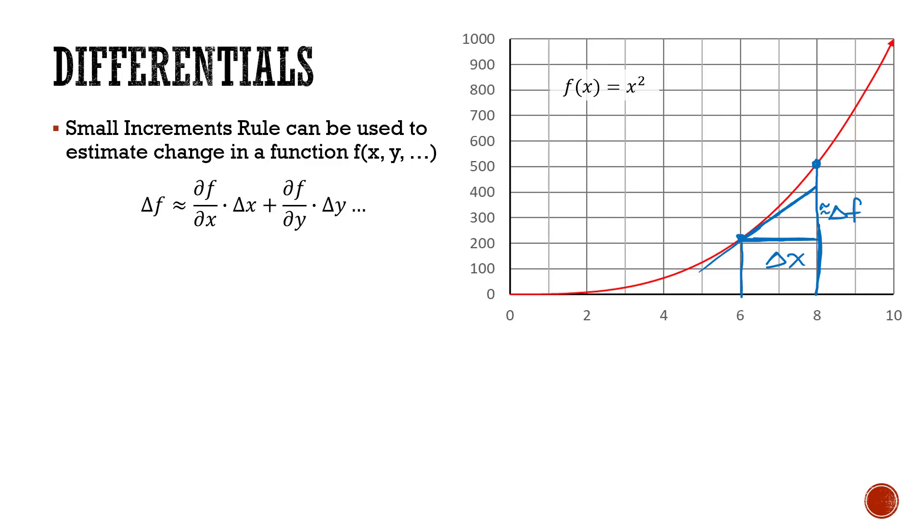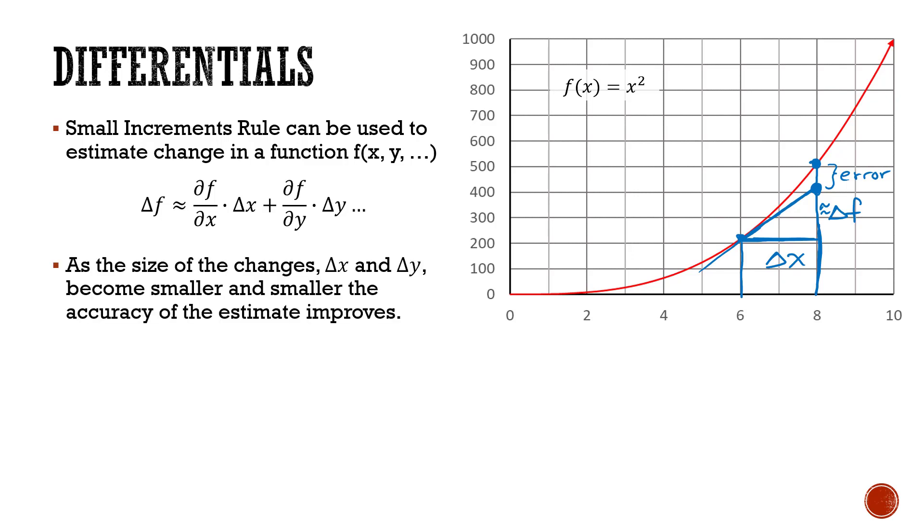Now this would be an approximation. As we can see, the result would end up with some error here where we wouldn't quite be hitting our actual f of x value, but would be pretty close to it. Now what happens as the size of this increment change in x decreases, the accuracy of our estimate improves.